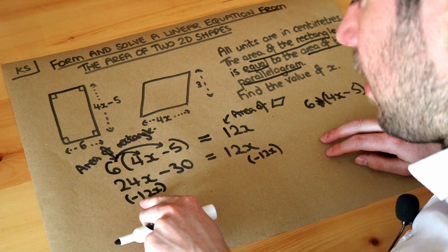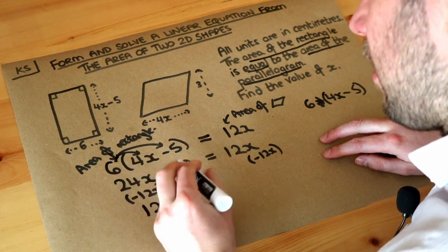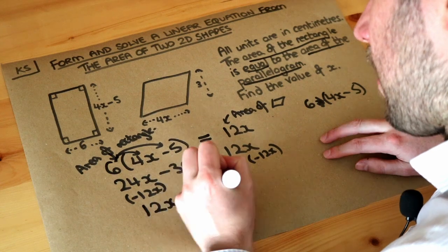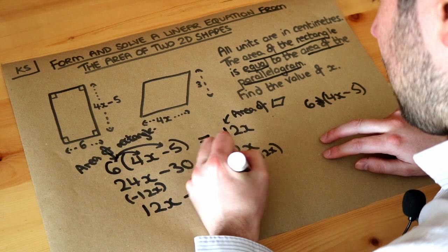So now, 24x minus 12x, or 24 minus 12 is 12. So we've got 12 lots of x. We've still got that minus 30. But 12x minus 12x is just zero. Anything minus itself is just zero.